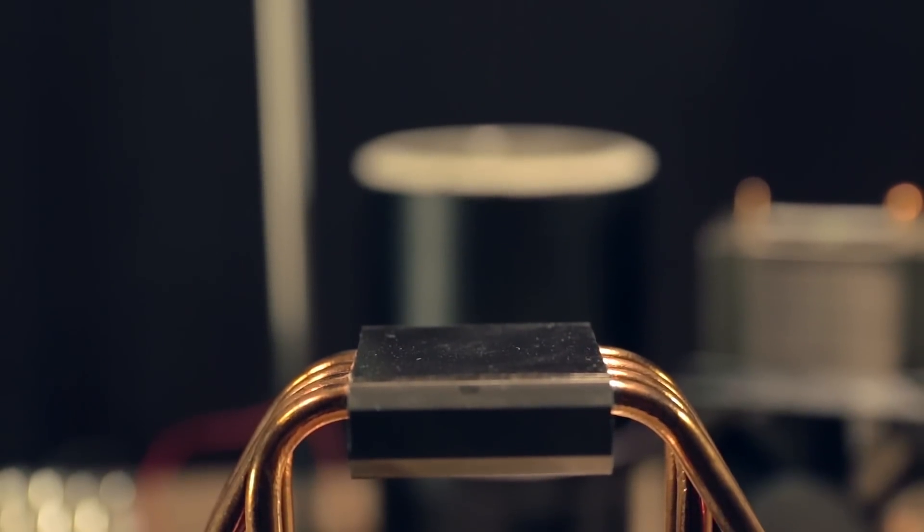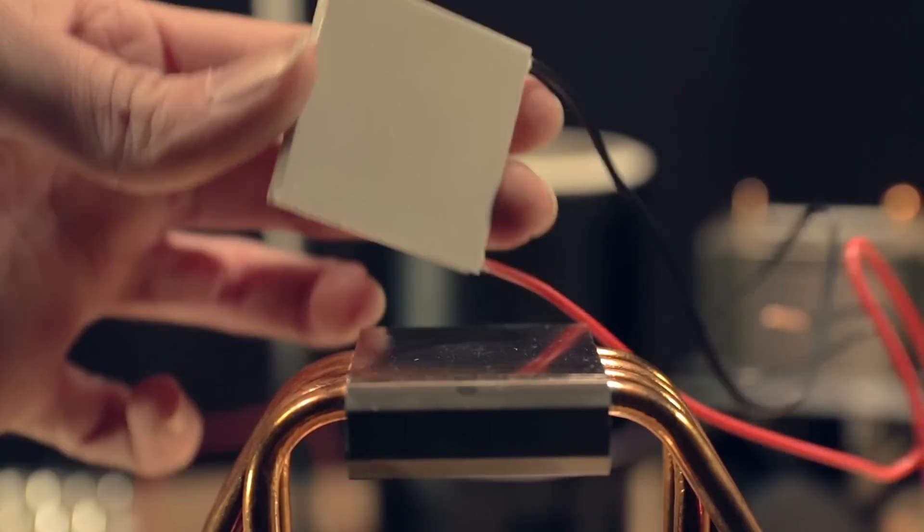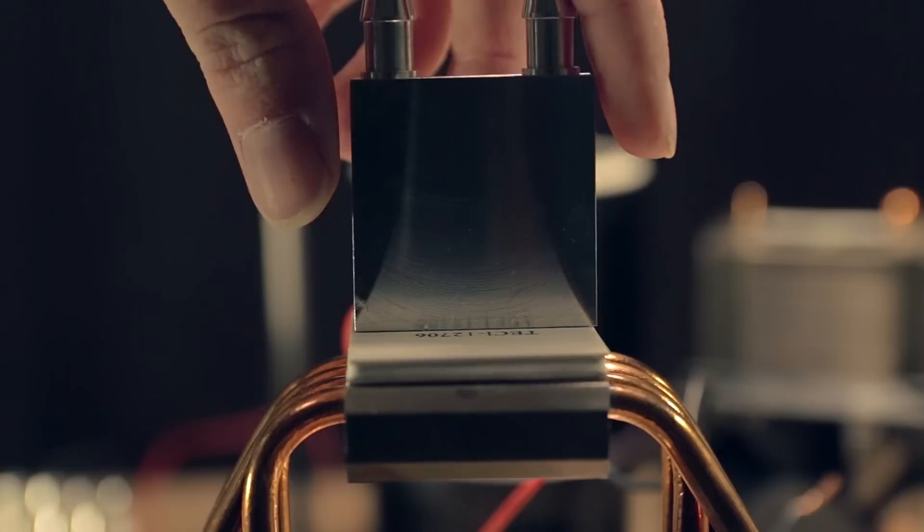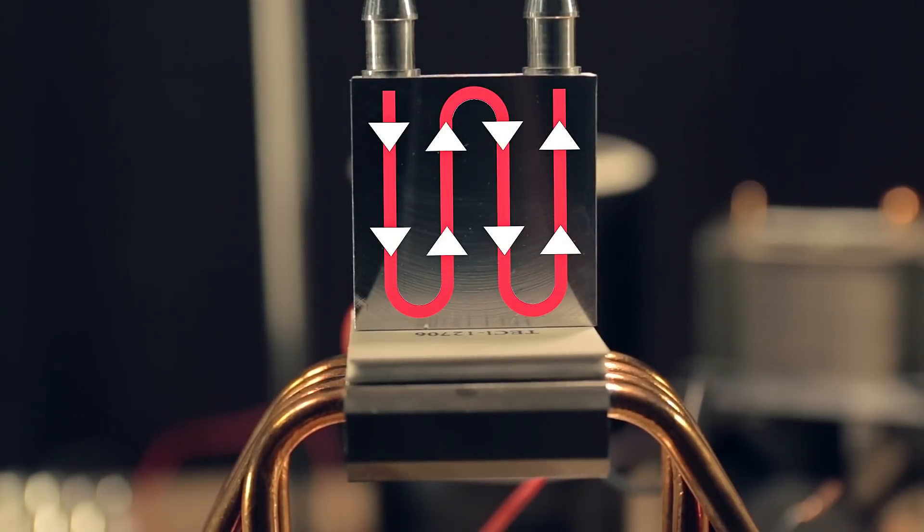The way this will work is I've got a CPU heatsink from an old computer. I'm going to interface the hot side of the Peltier chip with the heatsink. For the cold side, I've got this aluminum block with channels cut out on the inside so water can flow through.